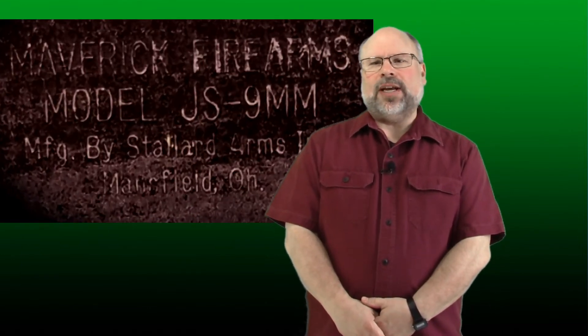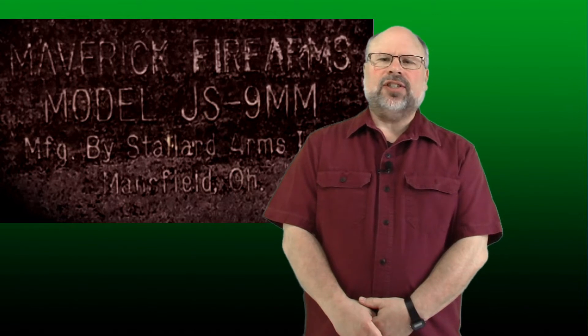Initially marketed as the Maverick JS9, they produced around 6,000 or so before Mossberg's Maverick caught wind of the name and issued a cease and desist, resulting in a name change for the company to Stallard Arms, with the pistol being renamed the Stallard JS9.